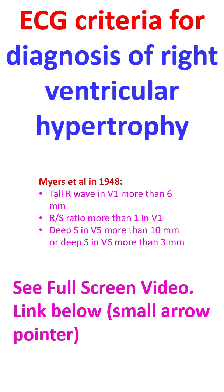Some of these are still very popular. There were a few more criteria by them based on small S in V1, small S in V5, V6, and reduced R by S ratio in lateral leads, which are seldom used. QR in V1 was another criteria for RVH by Mayers et al, which is considered significant even now.